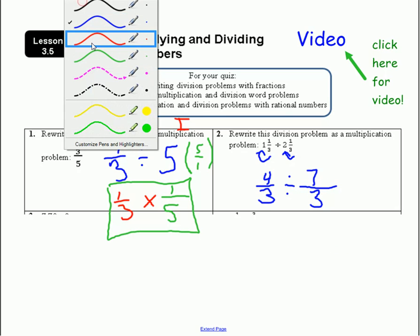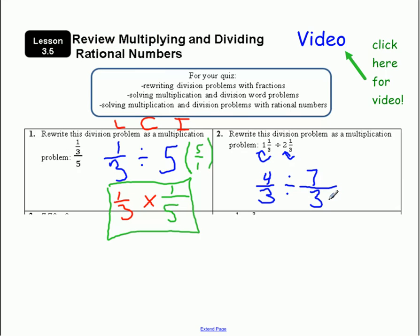Now that it looks like a nice division problem, I'm going to rewrite it as a multiplication problem. Leave, change, inverse. So leaving four-thirds alone, changing division to multiplication, and taking the multiplicative inverse or the reciprocal of seven-thirds, which is three-sevenths. And that would be my multiplication problem.